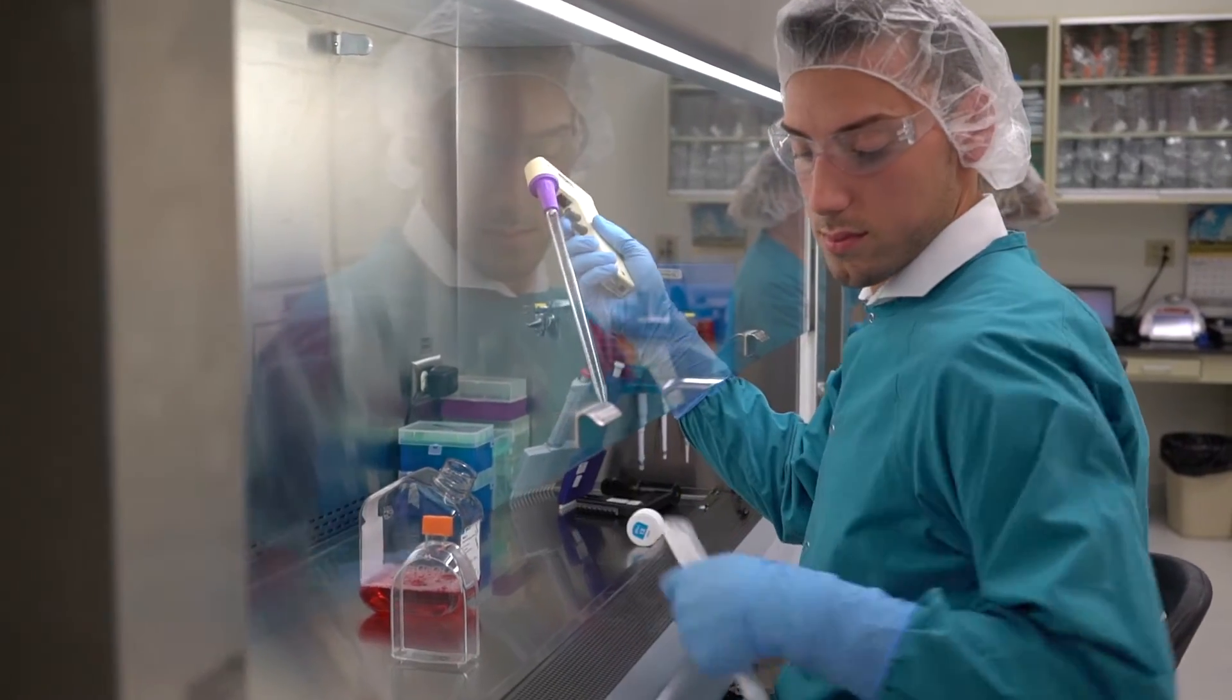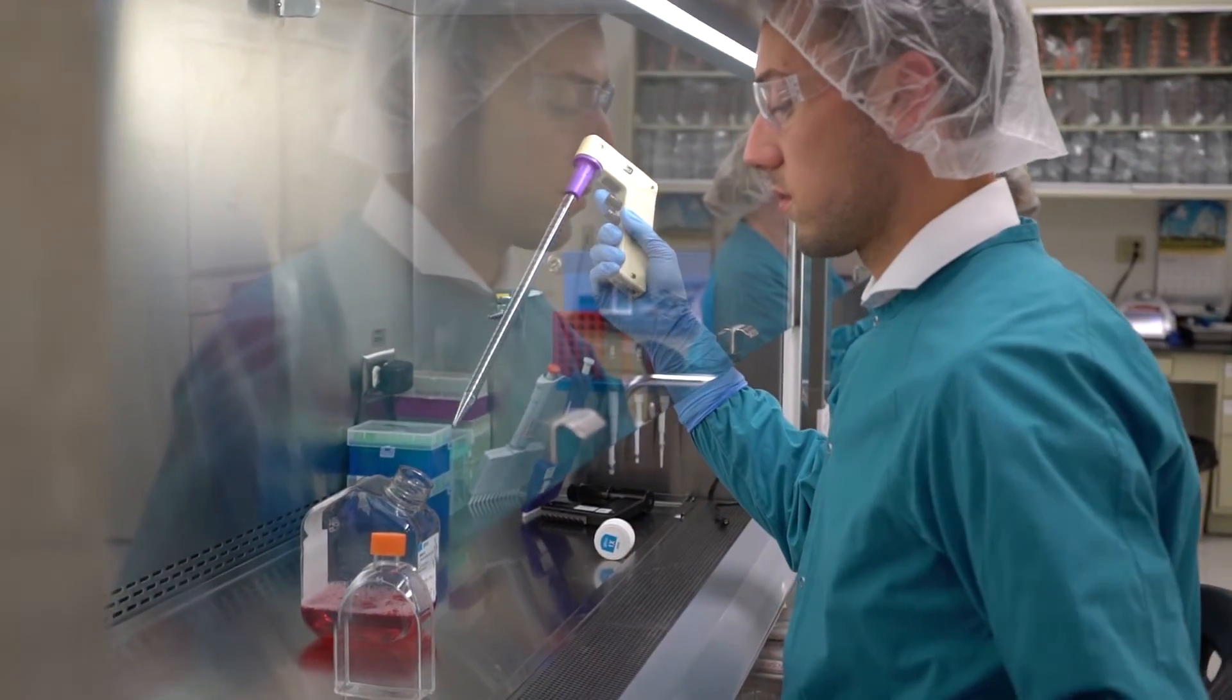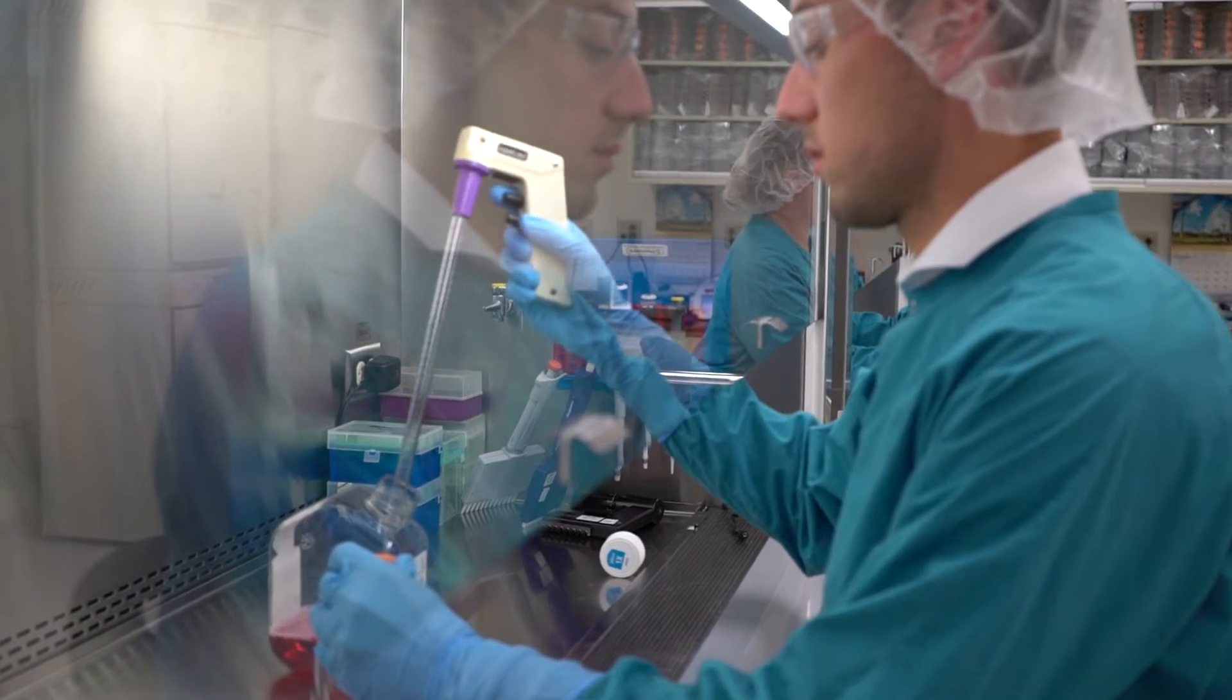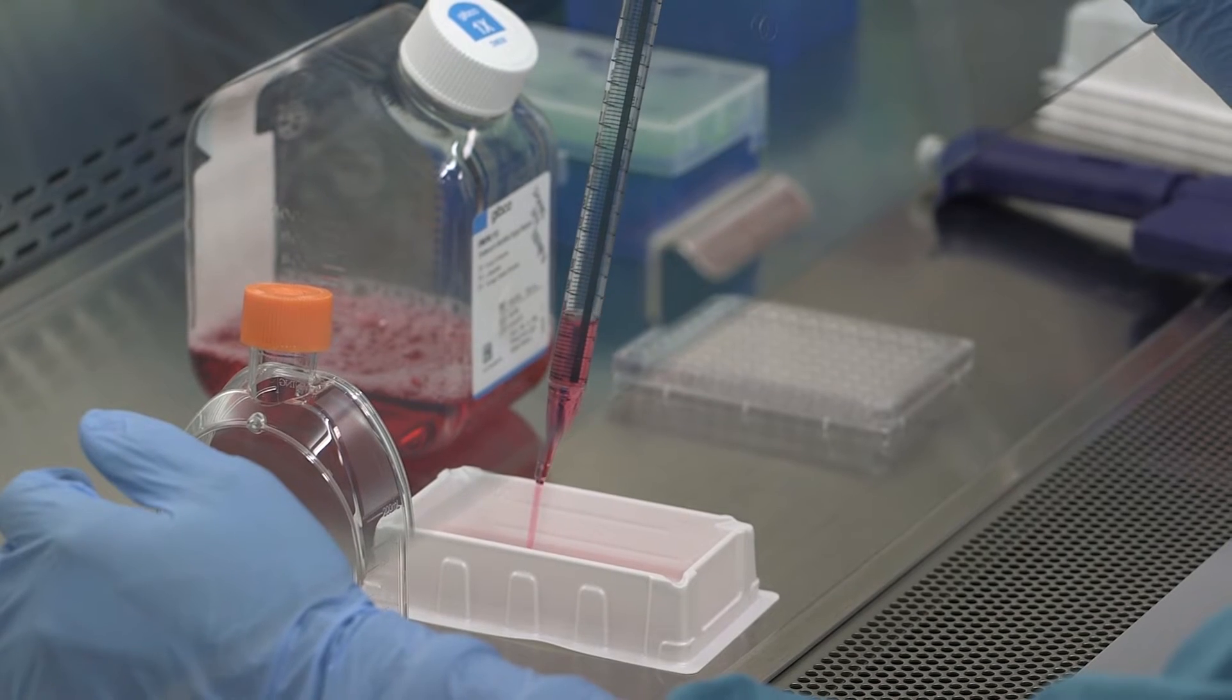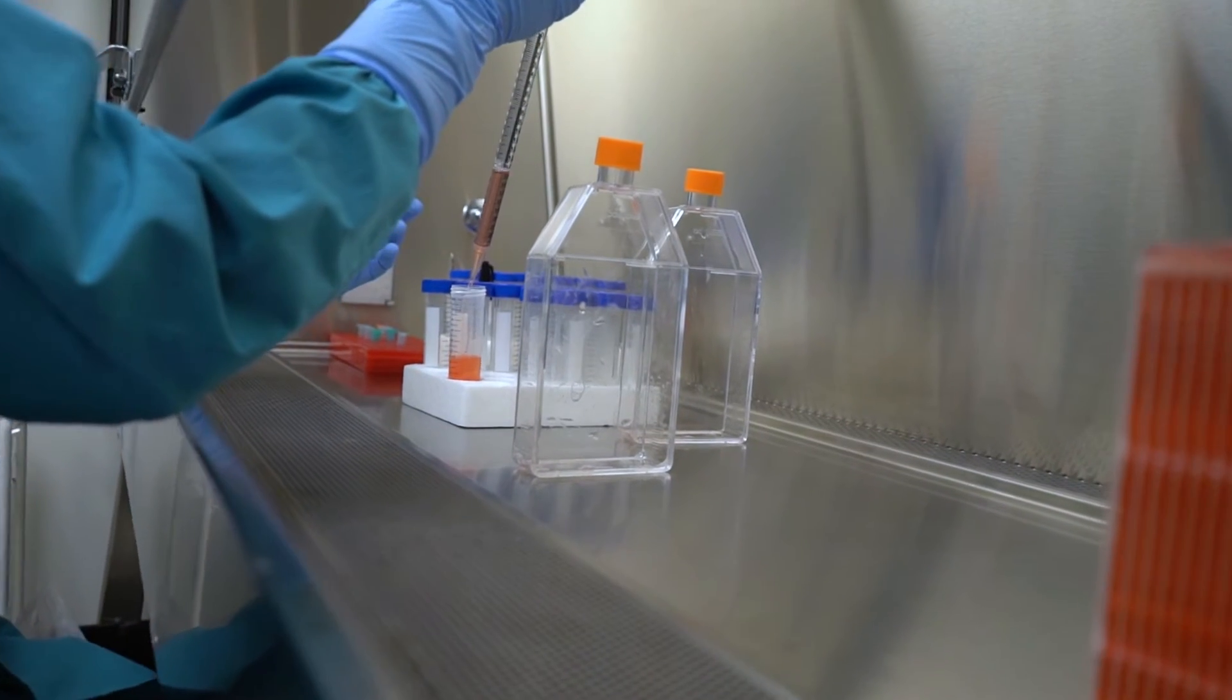Isotyping is another assay to confirm this. We do isotyping to confirm single clone to single antibody being produced and we will go ahead and subclone this clone multiple times to ultimately deem its monoclonality.